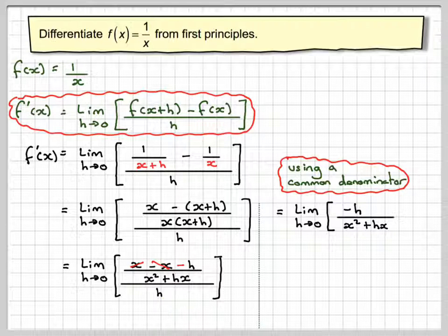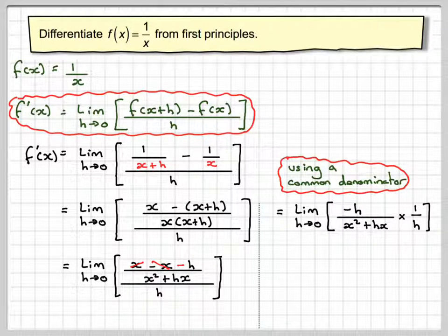Now dividing by h is the same as multiplying by 1/h. It would mean by rules of division of fractions, and therefore this h and this h will then cancel out, but remember we still have the minus sign at the top here.